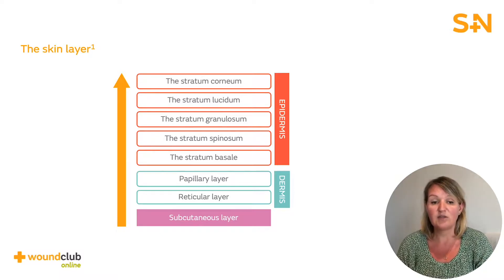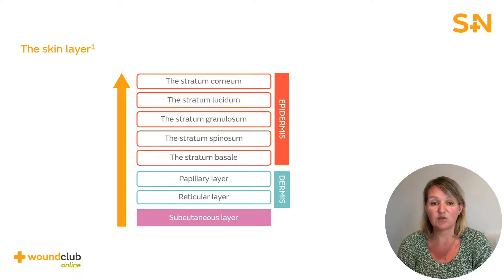Below the dermis lies the subcutaneous layer. This layer is made up of connective tissue, fatty tissue, and larger blood vessels. It provides support to the dermis, and the fat stored here provides protection and insulation to internal structures.